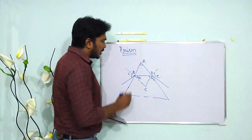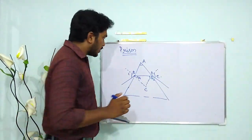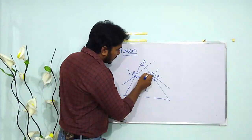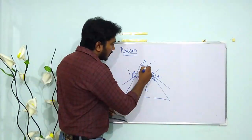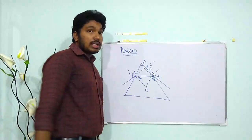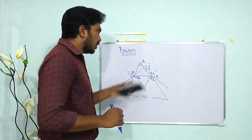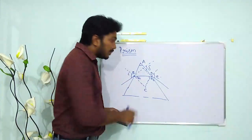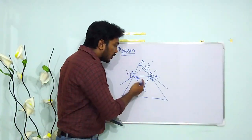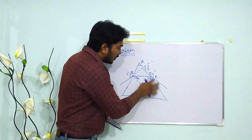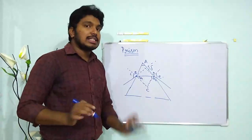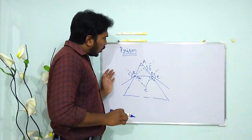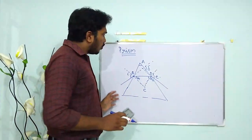This angle I call the angle of emergence. Extending the incident ray and the emergent ray, the angle between them is called the angle of deviation, delta. So at the first surface we have angle of incidence i, refraction angle r1; at the second surface refraction angle r2 and angle of emergence e; and we define delta as the angle of deviation.